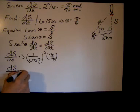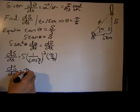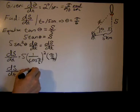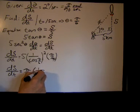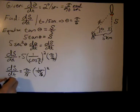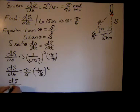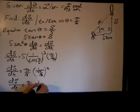So 5 pi over 90 is pi over 18, and then 1 over the cosine of pi over 6, which is root 3 over 2, squared.